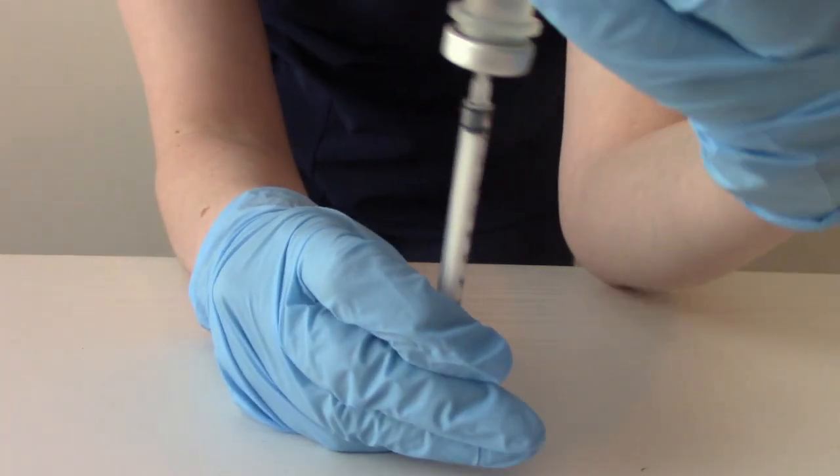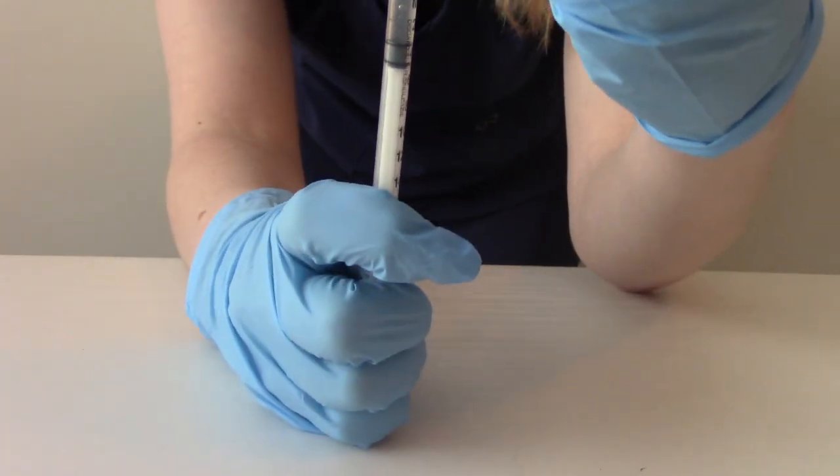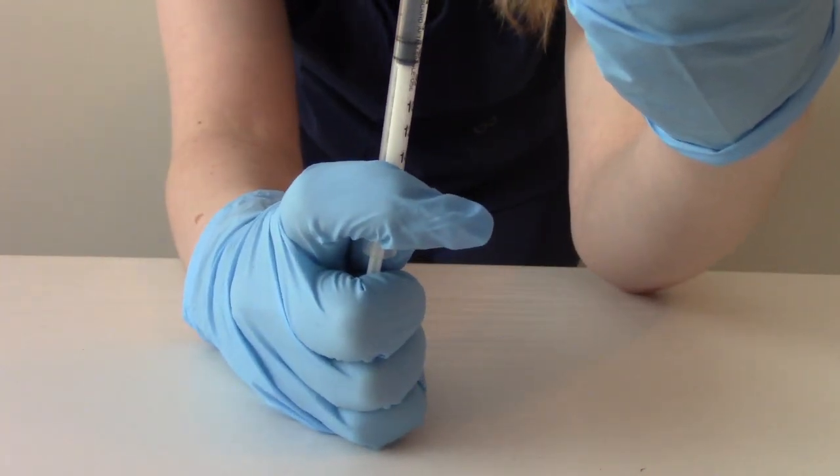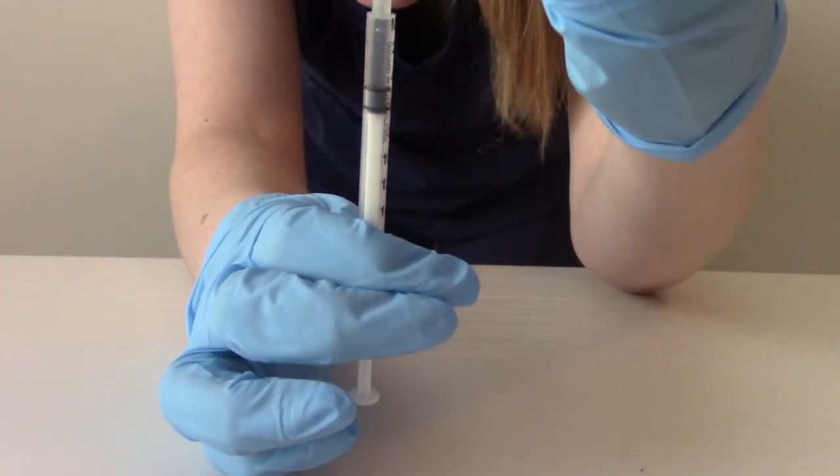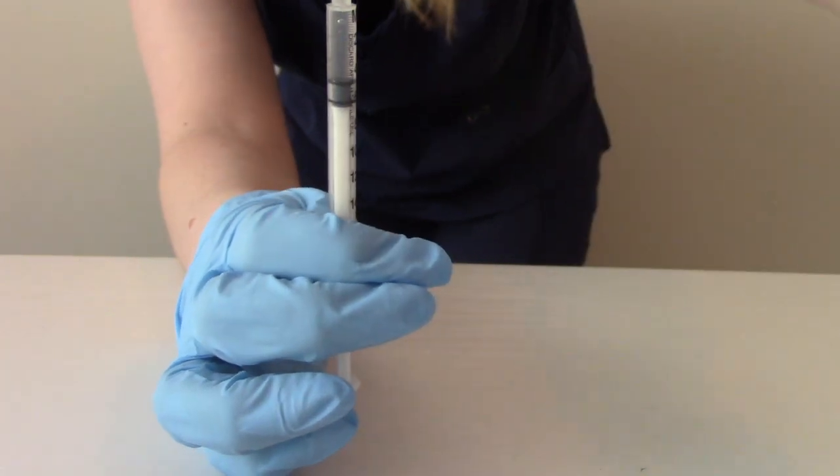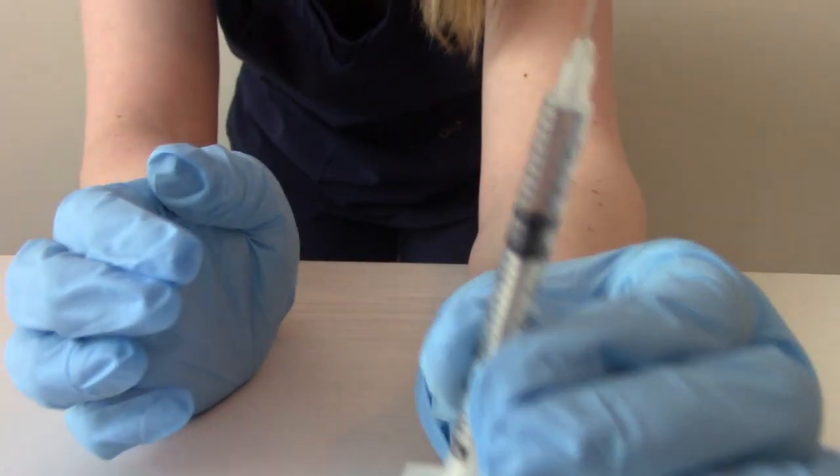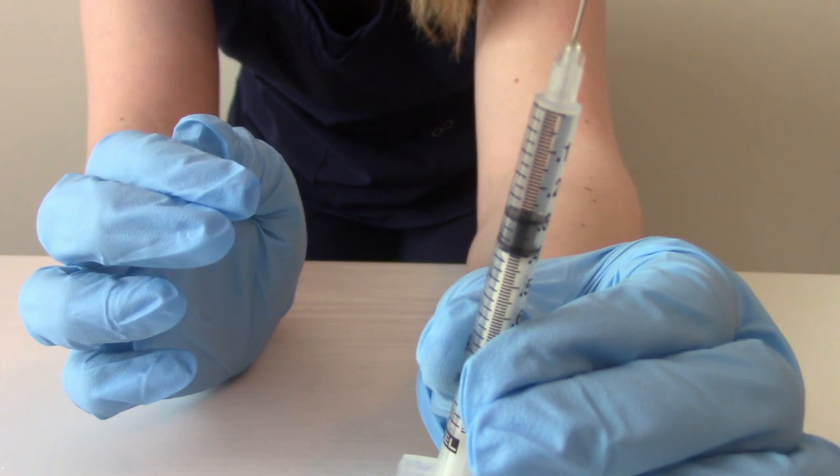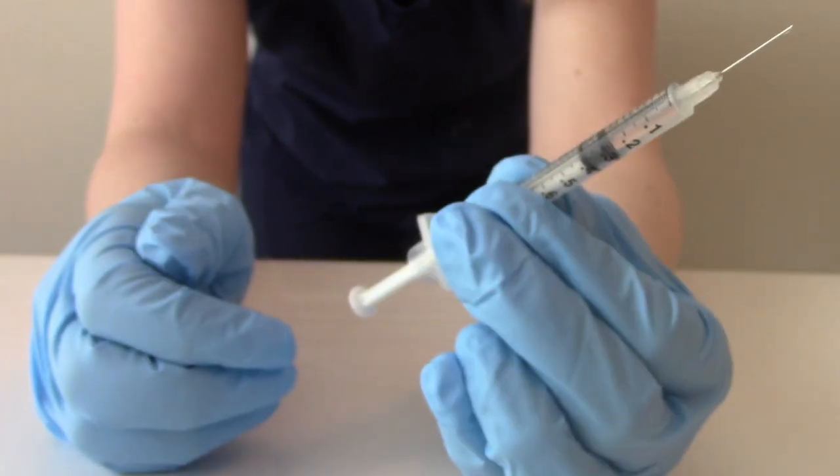And it's best to do this at eye level. You can't see me, but I'm crouching so I can see it and make sure we're at the right place. So here we are, 0.3. Now we're ready to inject this in the patient.